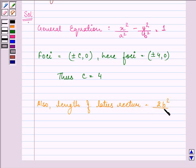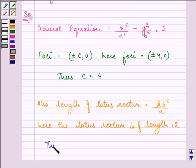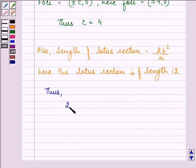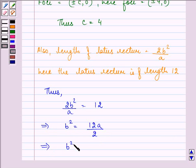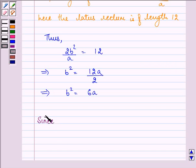Here the latus rectum is of length 12, thus we have 2b²/a = 12. That implies b² = 12a/2, that is equal to 6a.